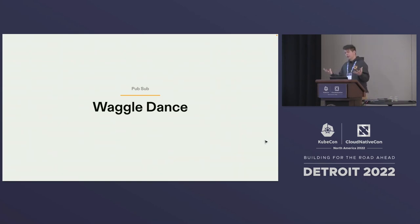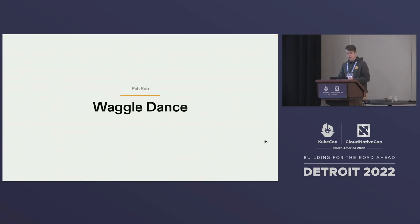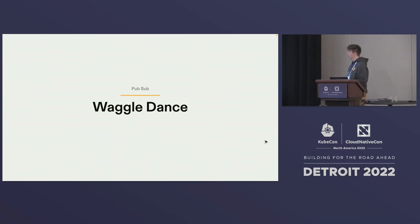Those are the different types of bees — the different workloads. Now there is communication. It's a distributed system, so they need to talk to each other. A common pattern in cloud-native applications running on Kubernetes is a PubSub mechanism, something like NATS or Redis or RabbitMQ. Bees have several PubSub mechanisms, one of which is known as the waggle dance.